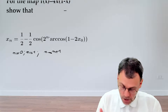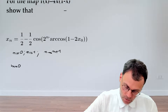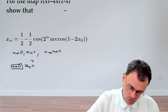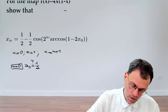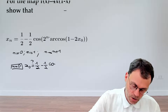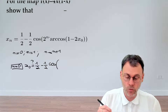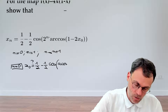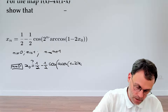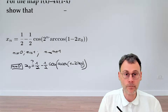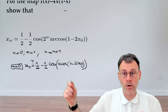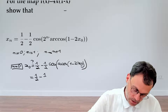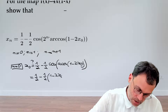Let's get started with the case n equal to 0. We need to show that x₀ is equal to one half minus one half cosine of two to the power zero times arc cosine of one minus two x₀. The cosine and the arc cosine annihilate, so we get one half minus one half of one minus two x₀.